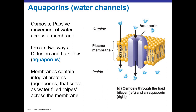Osmosis is the passive movement of water across the membrane, going down its concentration gradient. This occurs in two ways: simple diffusion where water molecules diffuse across without help, and through aquaporins — protein channels that allow bulk flow, acting like a pipe to get lots of water into or out of cells as needed. This makes sense since water is the universal solvent and so important for any cell.